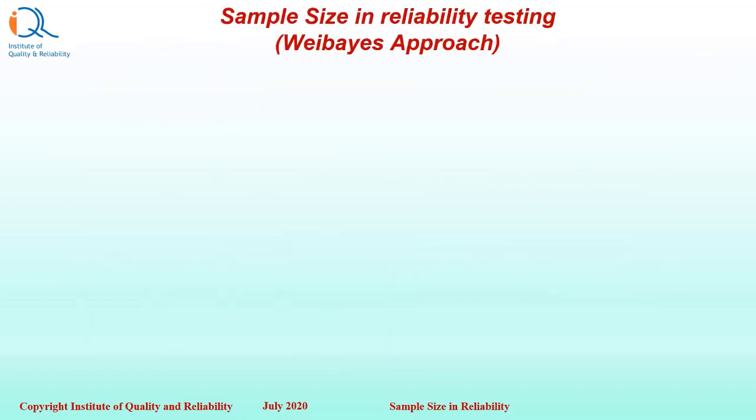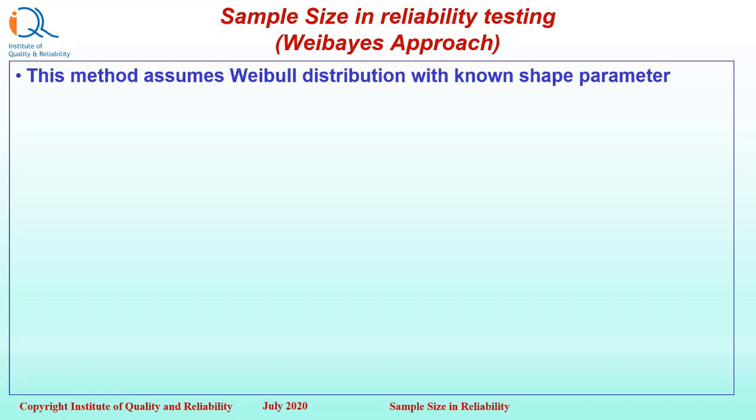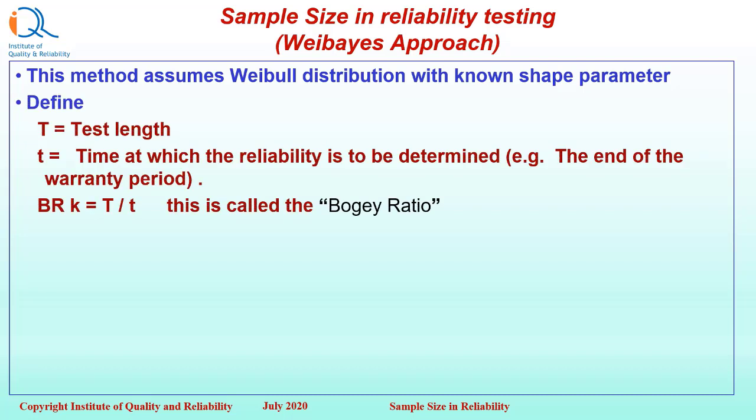Now we will see another method to determine sample size in Reliability Testing. This is called Weibull-Based Approach. This method assumes Weibull distribution with known shape parameter beta. Let us define capital T as the test length, small t is the time at which the reliability is to be determined, for example, the end of warranty period. Then bogey ratio k equals test length capital T divided by small t. Remember the term bogey ratio.